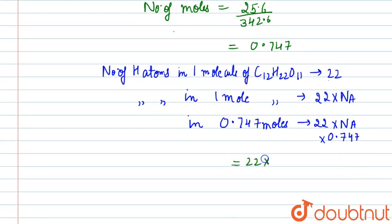22 × 6.022 × 10^23 × 0.747. Now this will be 9.91 × 10^23. So this is our answer. Thank you so much.